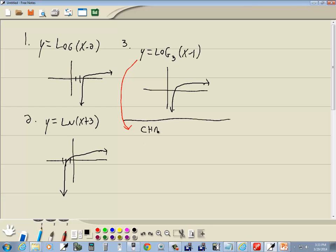For the change of base, we could rewrite this as log x minus 1 over log 3. The reason why we choose log is because we have a log button on our calculator. Or you could do ln, natural log. You can actually do any base, but those are the only two that would make sense if you're going to plug it in your calculator. Because those are what you have buttons for.